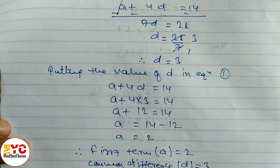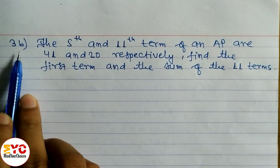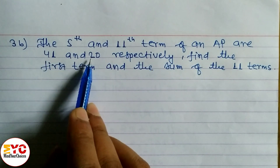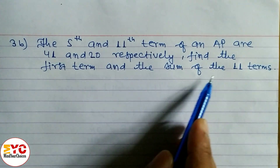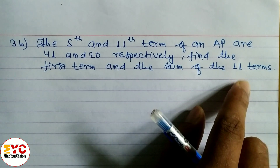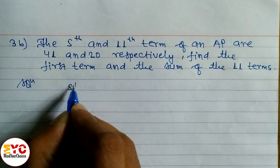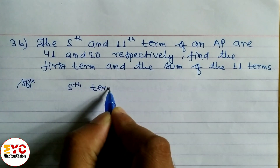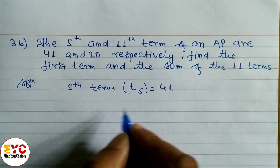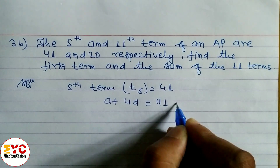Now question number 3B: the 5th and 11th terms of an AP are 41 and 20 respectively. Find the first term and the sum of 11 terms. Here the 5th term T5 equals 41, so the formula gives A plus 4D equals 41. That is equation 1.